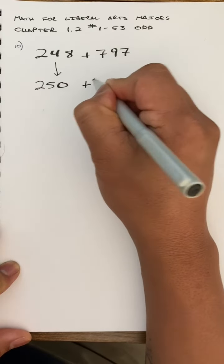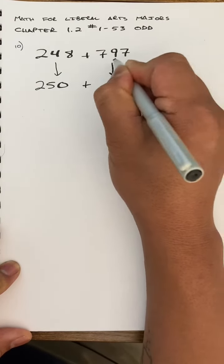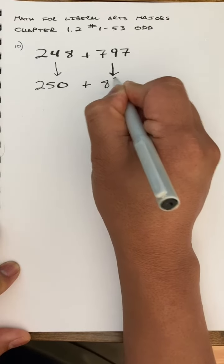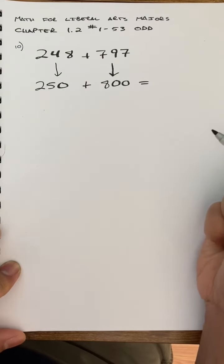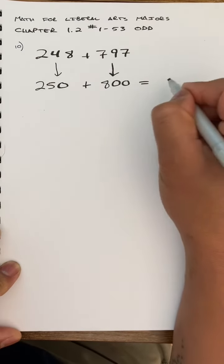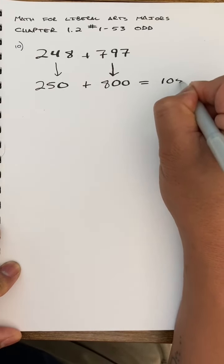Keep my plus sign there. This 797, I'm going to bump that up to 800, and add those two nice and simply in my head. 250 plus 800 is 1050.